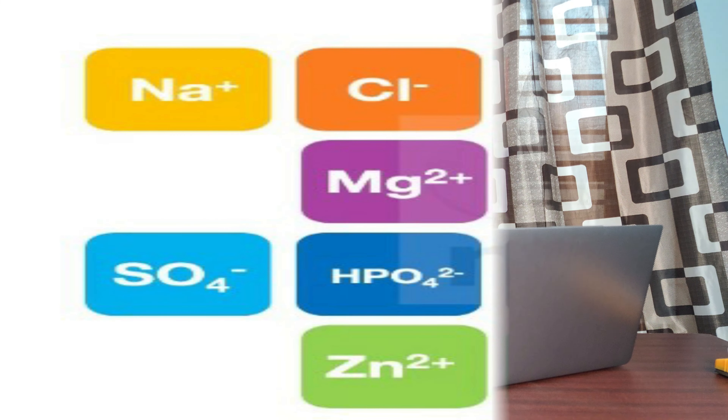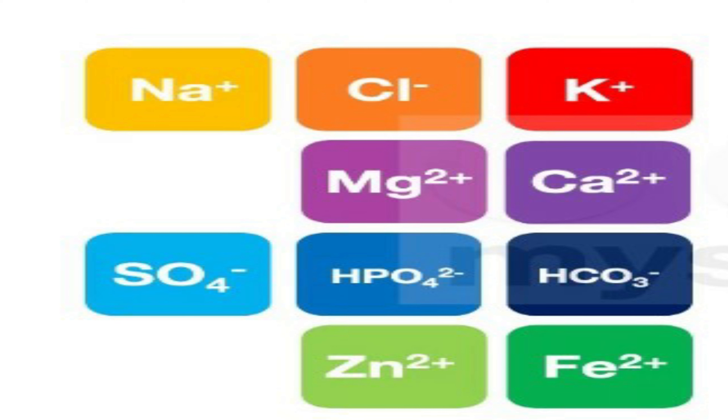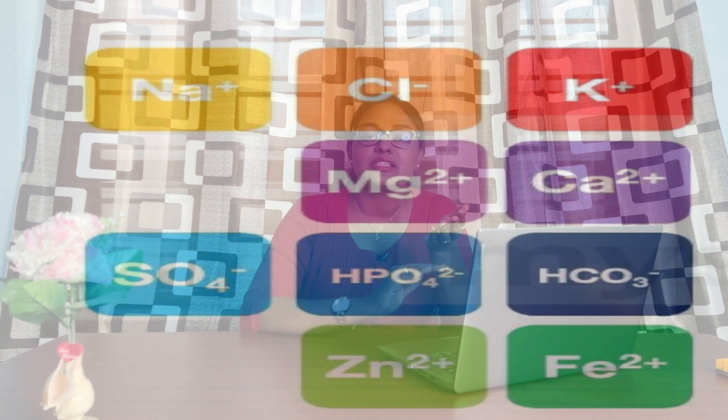The common electrolytes found in our body are sodium, potassium, magnesium, calcium, phosphorus, chloride, and bicarbonate. As mentioned, both positive and negative charges are present. Sodium, potassium, magnesium, and calcium carry positive charges, while phosphorus, chloride, and bicarbonate carry negative charges. In our upcoming classes, we will see what happens when there is an increased or decreased level of each particular electrolyte in our body.